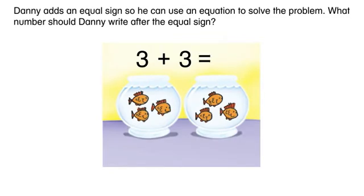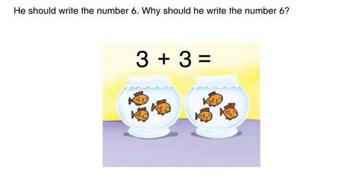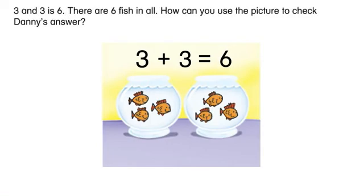Danny adds an equal sign so he can use an equation to solve the problem. What number should Danny write after the equal sign? He should write the number six. Why should he write the number six? Three and three is six. There are six fish in all.